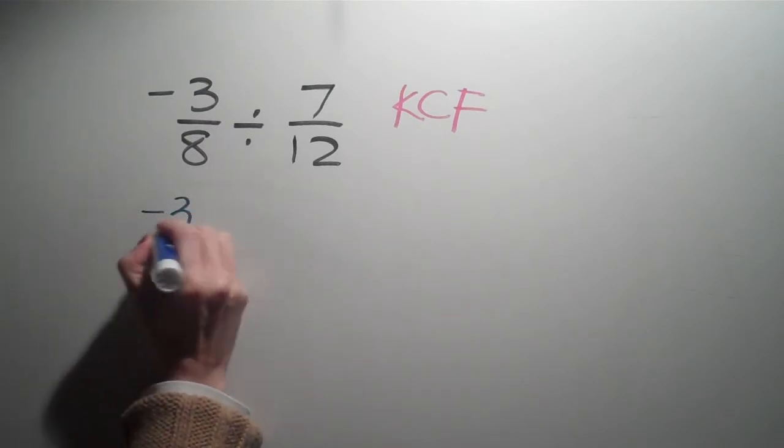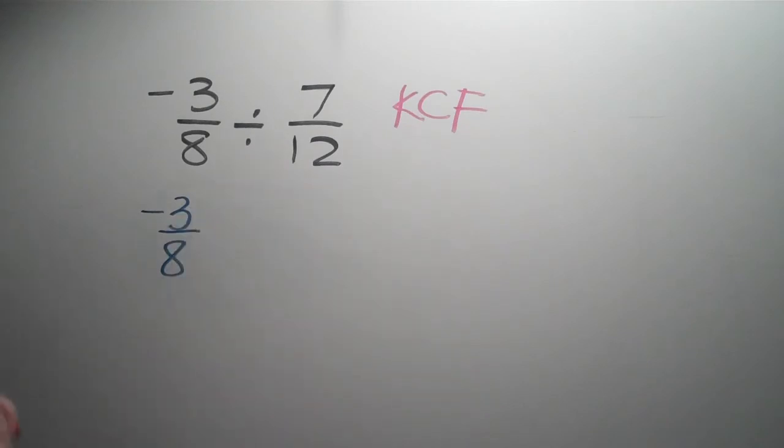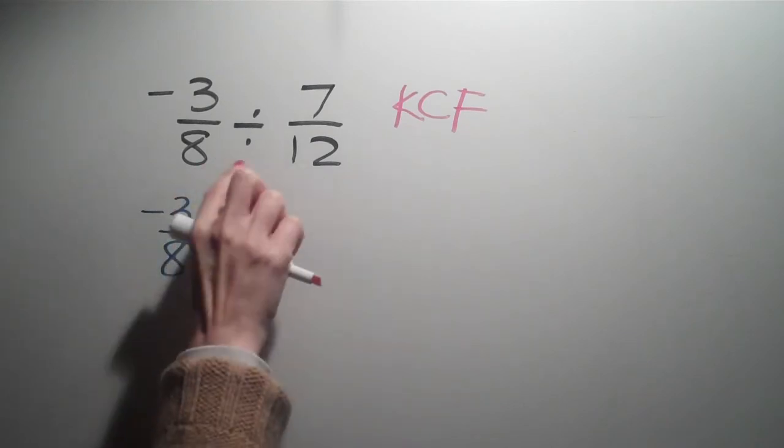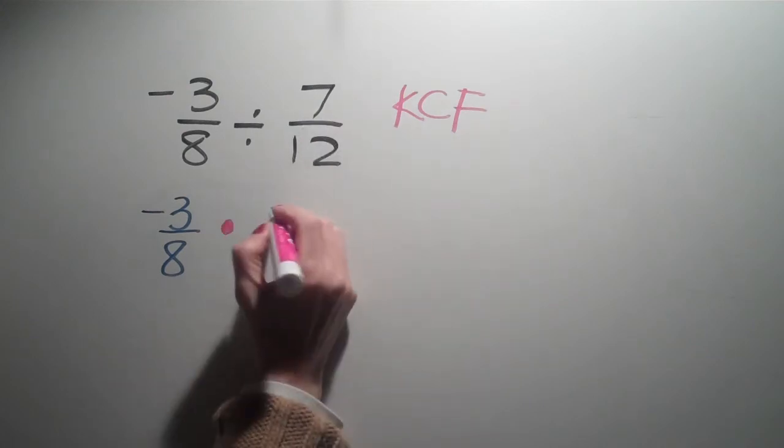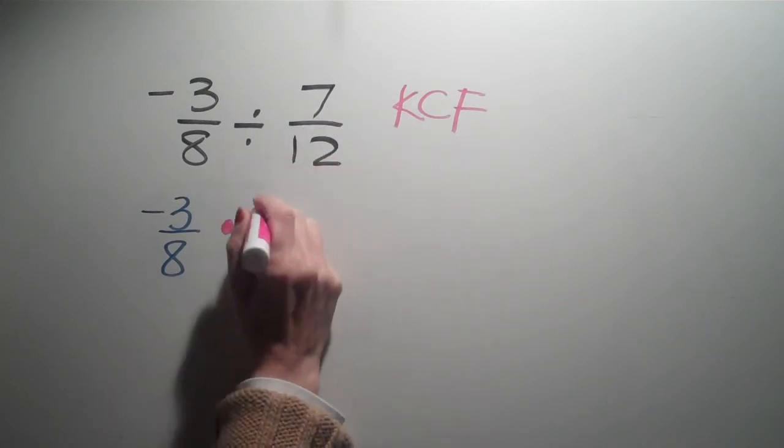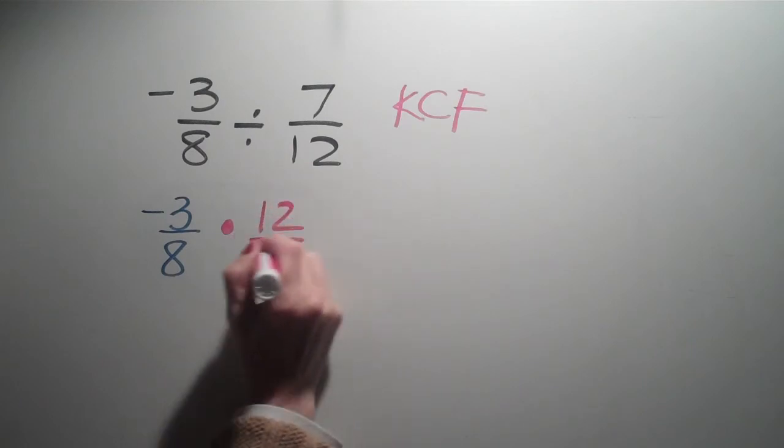It means that you're going to keep the first fraction the same, negative 3 over 8. You're going to change the division to multiplication, and you're going to flip the second fraction. So instead of 7 over 12, it becomes 12 over 7.